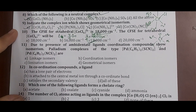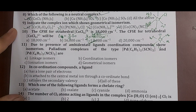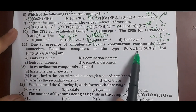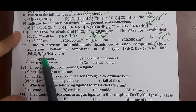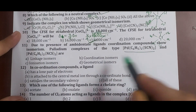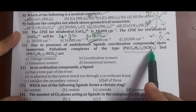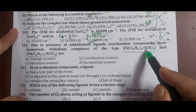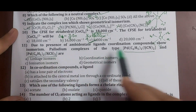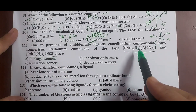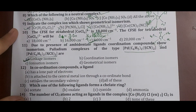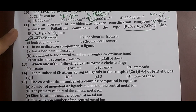Question 11: due to the presence of ambidentate ligands, coordination compounds show isomerism. The palladium complexes [Pd(C6H5)2(SCN)2] and [Pd(C6H5)2(NCS)2] have the same molecular formula and same ligands, but different donor atoms — sulfur in one and nitrogen in the other. This makes them ambidentate ligand isomers, called linkage isomers. Correct answer: option A, linkage isomers.